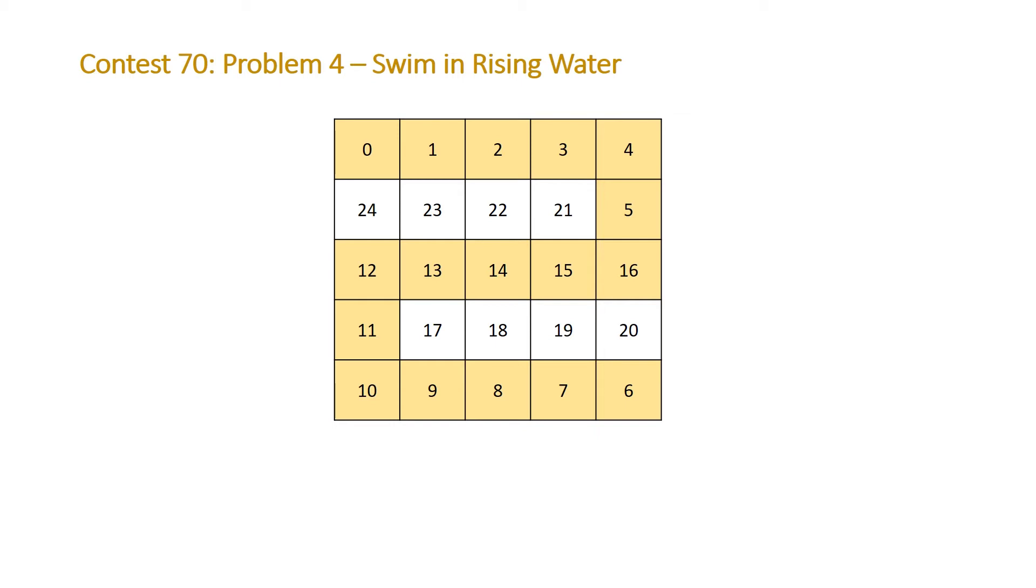So initially looking at this problem you might think well let's perform that operation in our grid and after every time step we can check to see if we have a solution, a path that goes from the top left to the bottom right. However, we can think about this problem in a different manner.